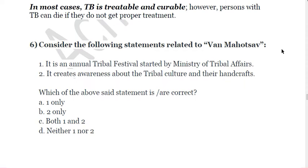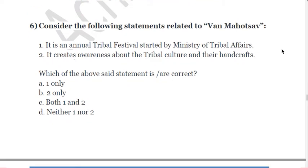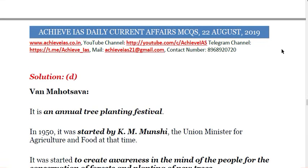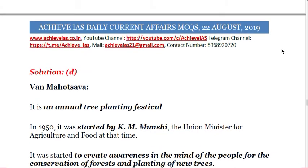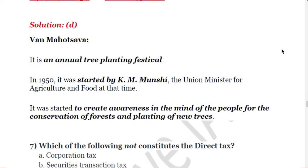The next question is about Van Mahotsav. First, it is an annual tribal festival started by the Ministry of Tribal Affairs. Second, it creates awareness about tribal culture and handicrafts. Both statements are incorrect. Van Mahotsav is not organized by the Ministry of Tribal Affairs — it is an annual tree-planting festival started by K.M. Munshi, the Union Minister for Agriculture and Food at the time, first started in 1950. The purpose was to create awareness about the need for conservation of forests and the planting of new trees.